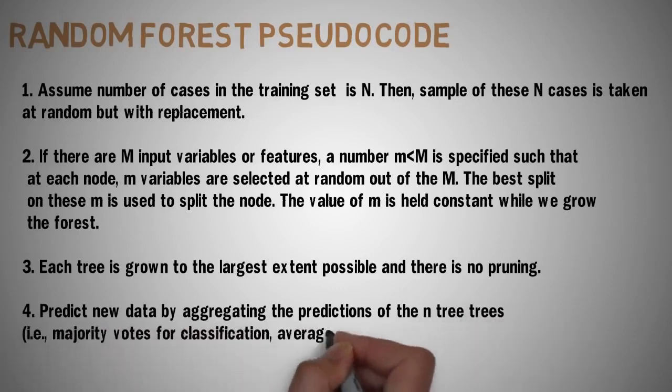Each tree is grown to the largest extent possible and there is no pruning. And then we predict the data by aggregating the predictions of the n trees, which means majority votes for classification and average for regression.